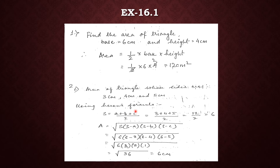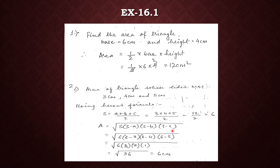Similarly, we have been given a triangle where all three sides are different, so we use Heron's formula. Since all three sides are different, it is a scalene triangle. First we find the semi-perimeter using (a + b + c) / 2, which comes to 6 centimetres. Then applying Heron's formula gives 6 centimetres squared as the answer.